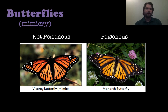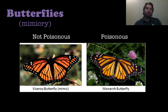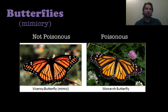The next example is mimicry — the Viceroy versus the Monarch Butterfly. Monarch Butterflies are actually quite poisonous for organisms that eat them. The Viceroy Butterfly, which is not poisonous, started evolving to look like the Monarch Butterfly, because organisms would not eat it if it resembled a poisonous butterfly. That's how it survived long enough — by mimicking a poisonous butterfly — and passed that trait on to further generations.